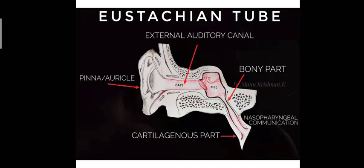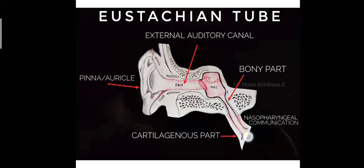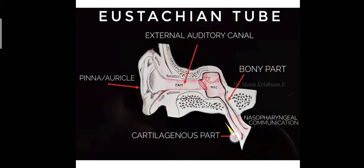Here we have a representation of the Eustachian tube. You can see the auricle or pinna, the external auditory meatus, then the middle ear cavity separated by the tympanic membrane. On the anterior wall of the middle ear cavity, there is an opening which connects it to the nasopharynx — this communication is termed the Eustachian tube. It is composed of two parts: the bony part and the cartilaginous part.